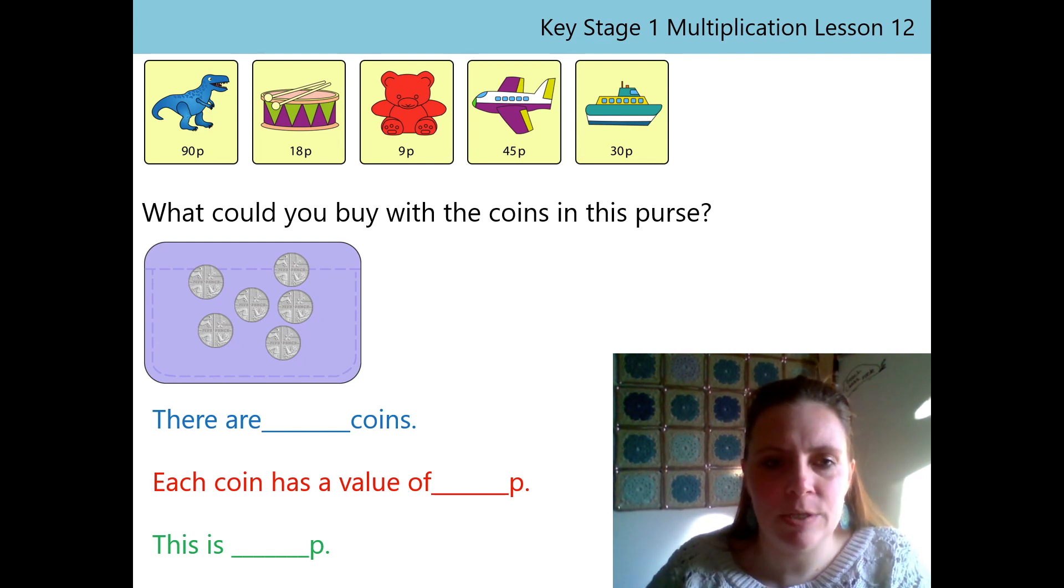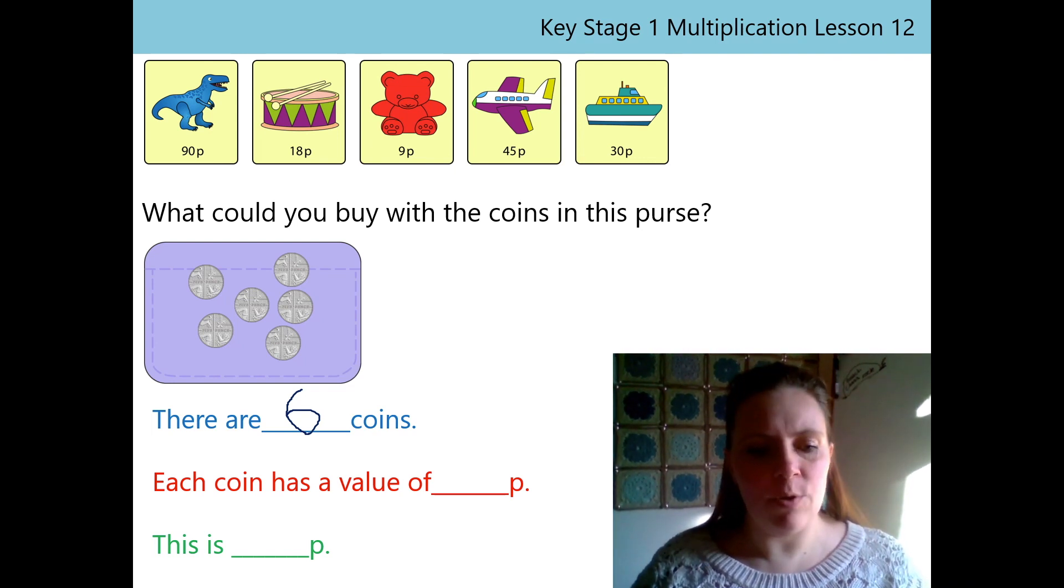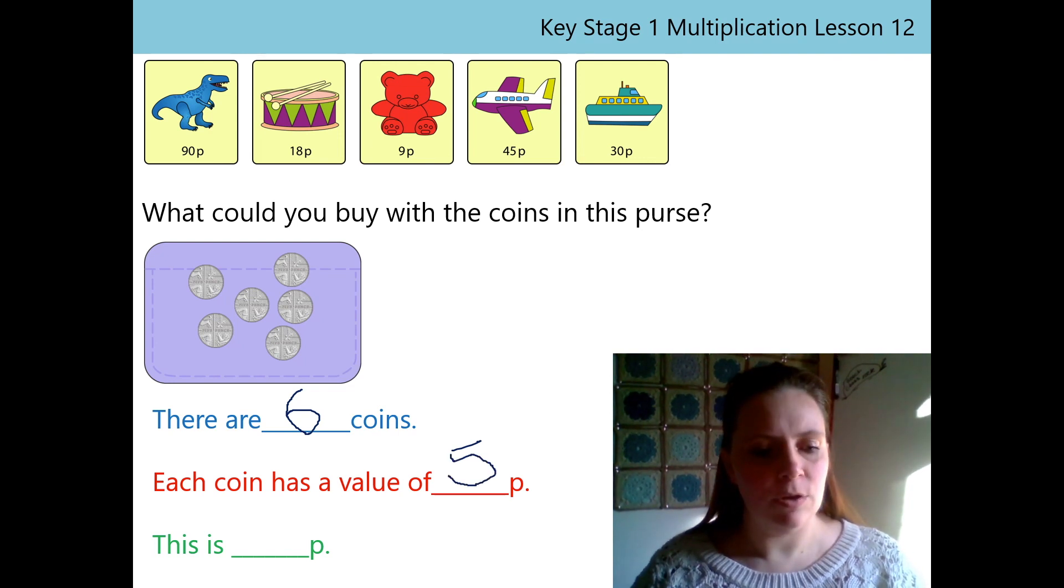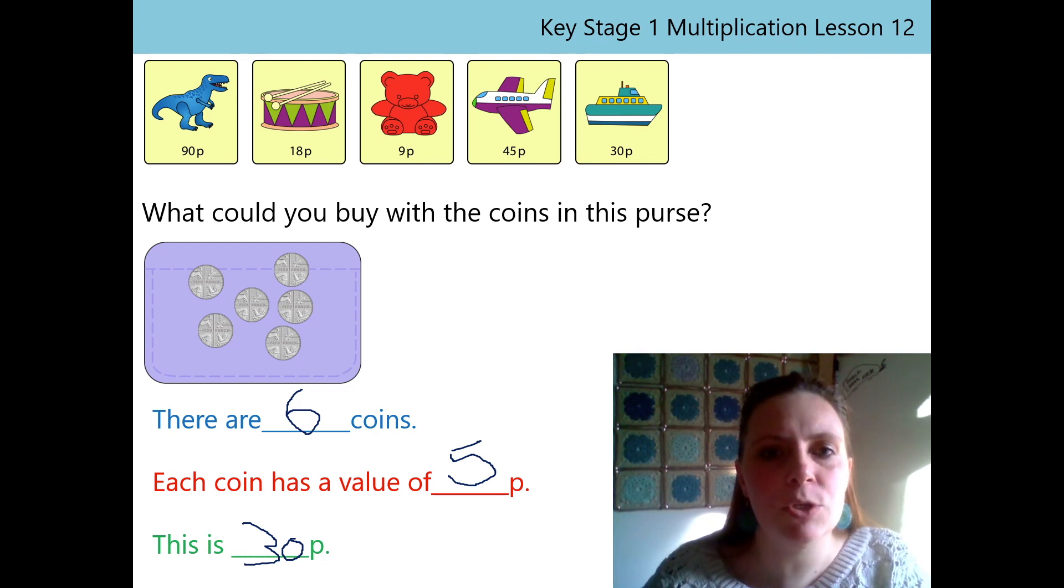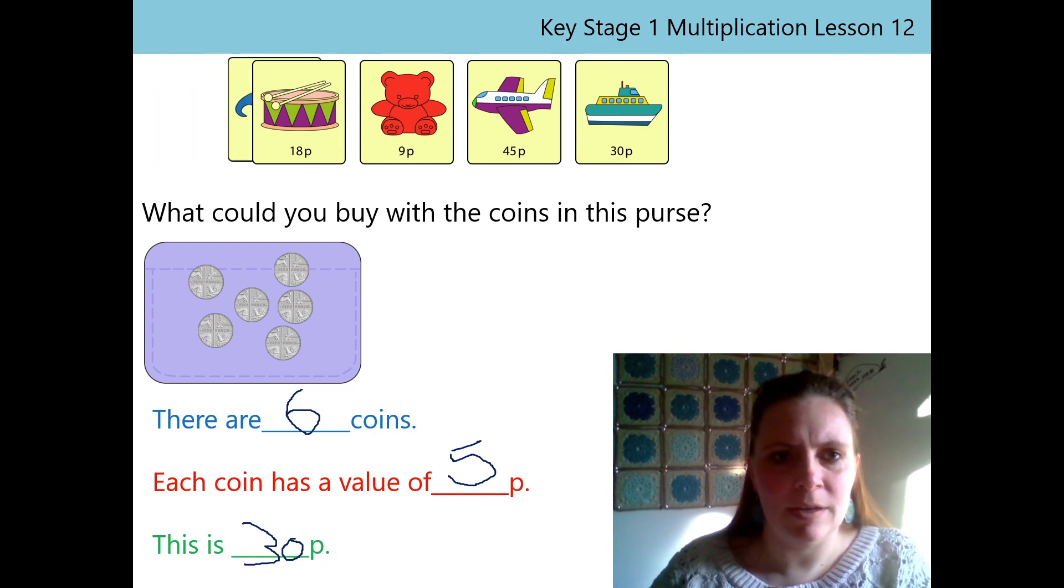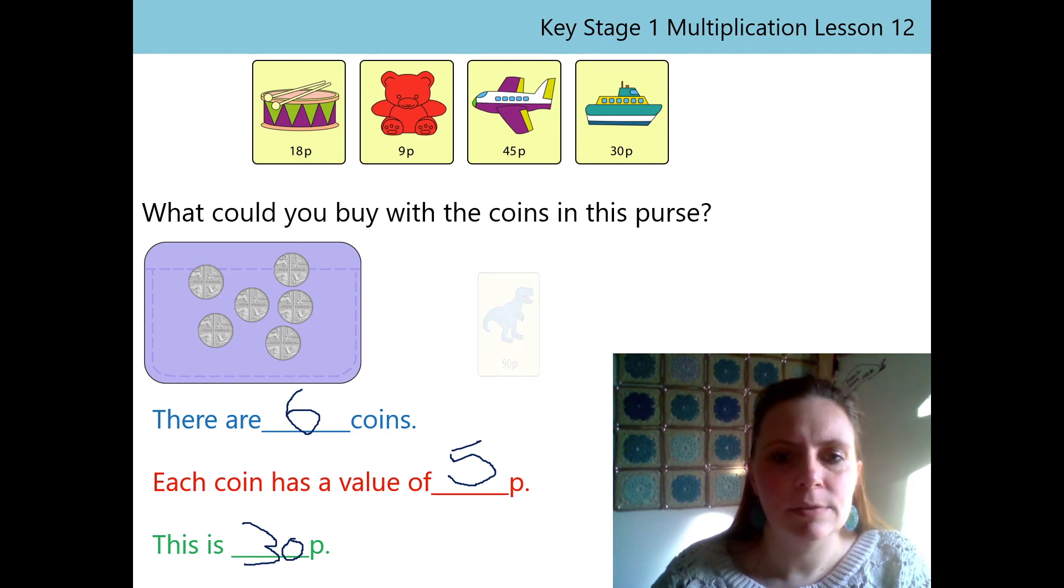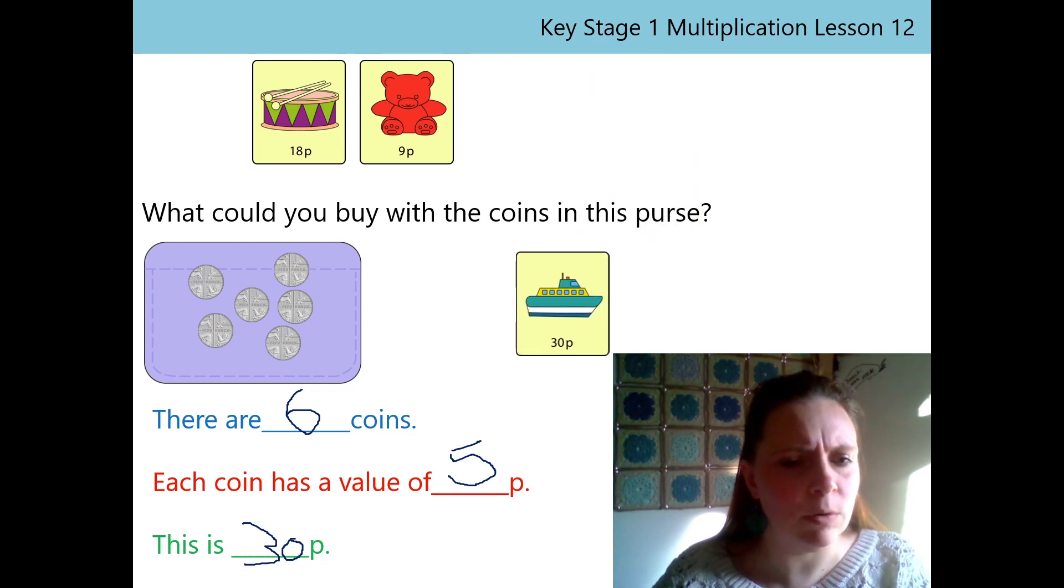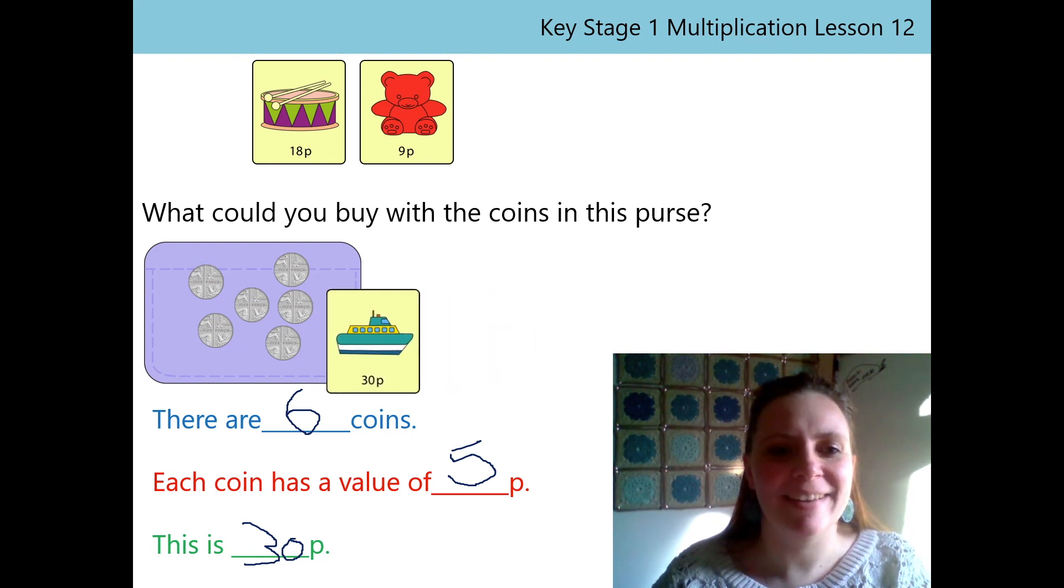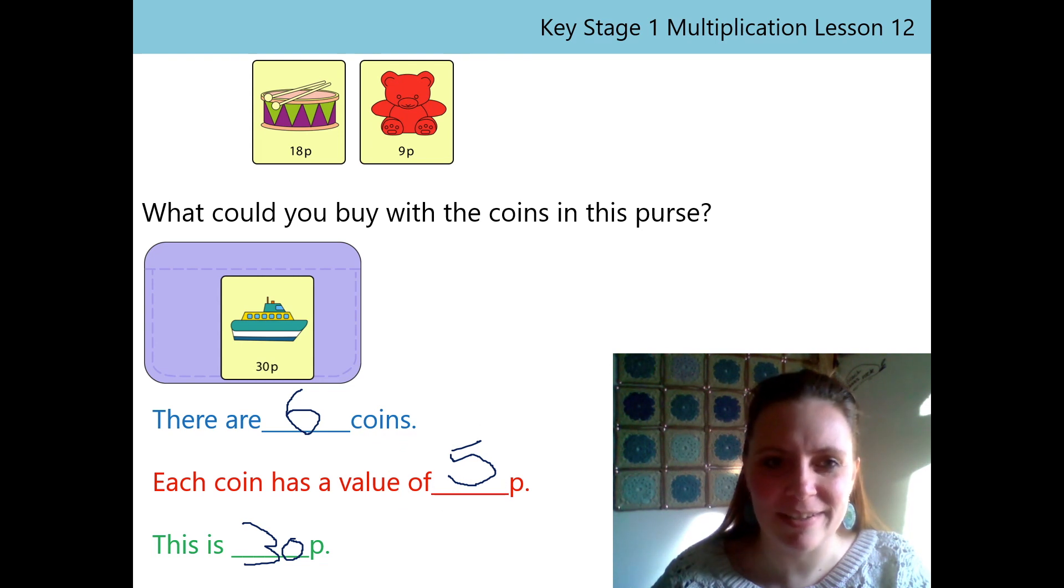Let's bring all that information together like we did last time, so we can work out what I can buy this time. We know that there are 6 coins. Can you say it for me? Each coin has a value of 5p. Well done. This is 30p. So what can I buy with my 30p? Have a look at my items at the top. Okay, not the dinosaur. Not the aeroplane. The boat? Oh, this is 30p. The price tag says 30p. Can I buy the boat? Yes, I can buy the boat. Thanks for your help again.